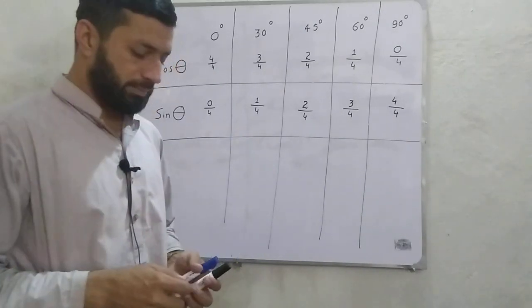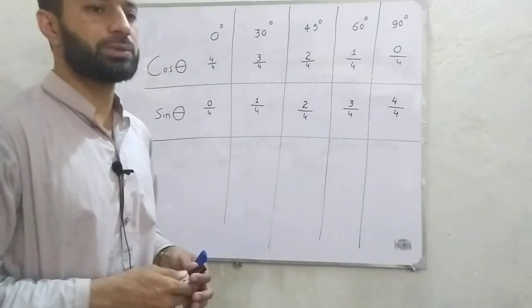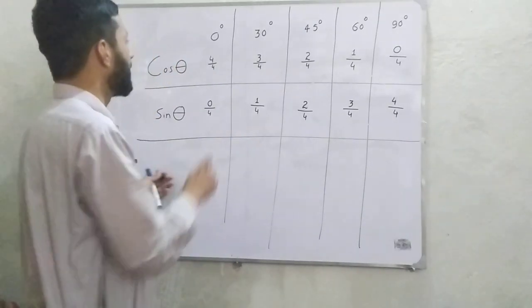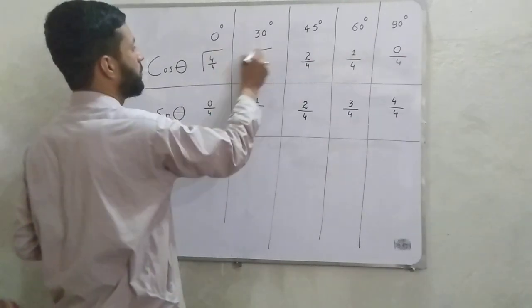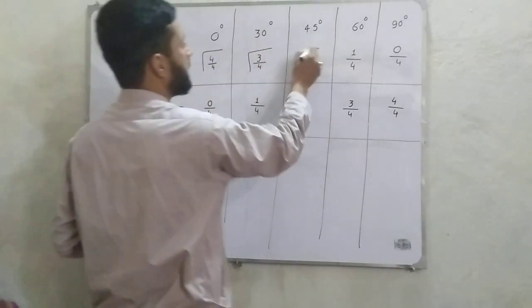In the third step, we take the square root of all these values — taking the square root of every number in the table.